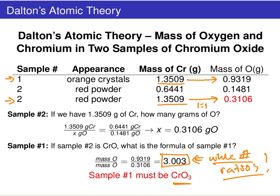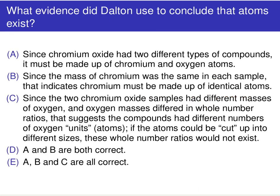Using these sorts of experiments as a guide, let's look at the following problem. Determine what evidence Dalton used to conclude that atoms exist. First up — is it (A) since chromium monoxide has two different types of compounds it must be made up of chromium and oxygen atoms?